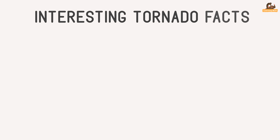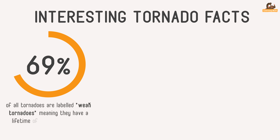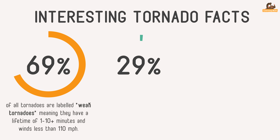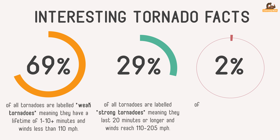Interesting tornado facts! 69% of all tornadoes are labeled weak tornadoes, meaning they have a lifetime of 1 to 10 minutes and winds less than 110 miles per hour. 29% of all tornadoes are labeled strong tornadoes, meaning they last 20 minutes or longer and winds reach 110 to 205 miles per hour. 2% of all tornadoes are labeled violent tornadoes, and these can last over an hour.